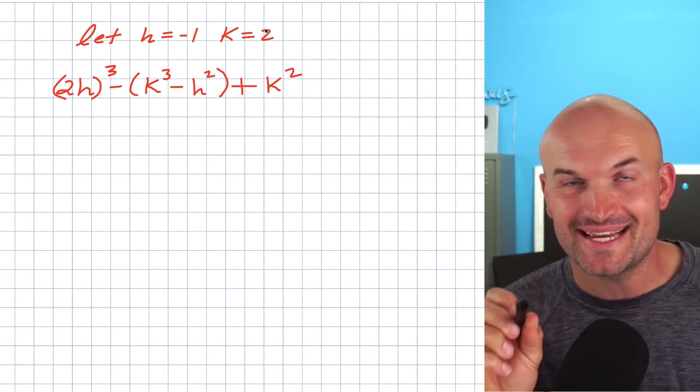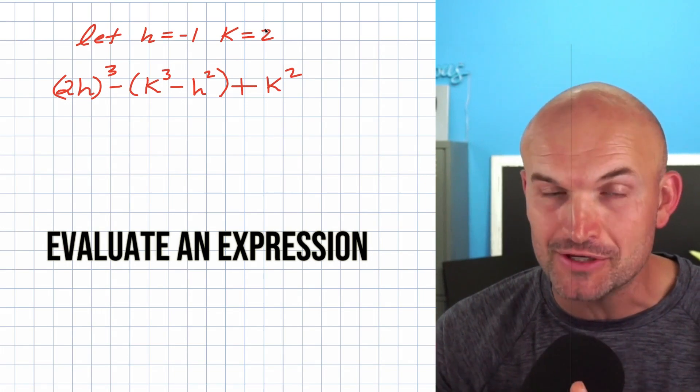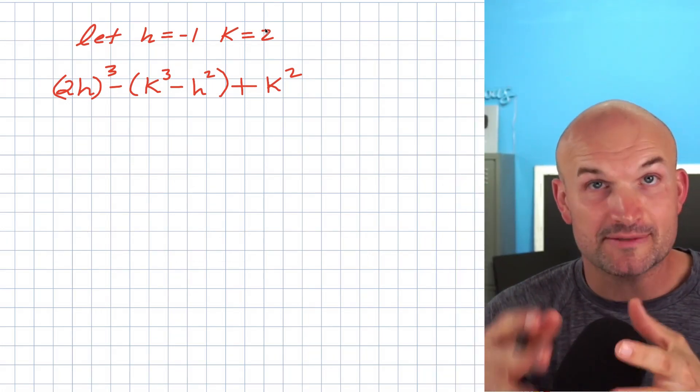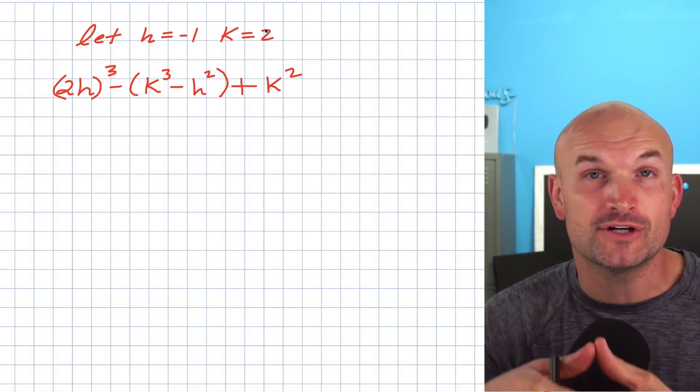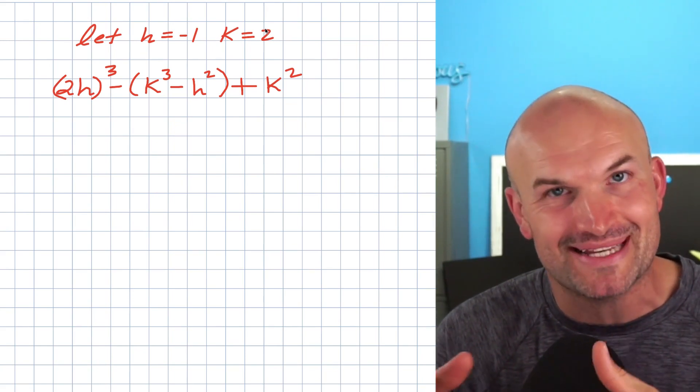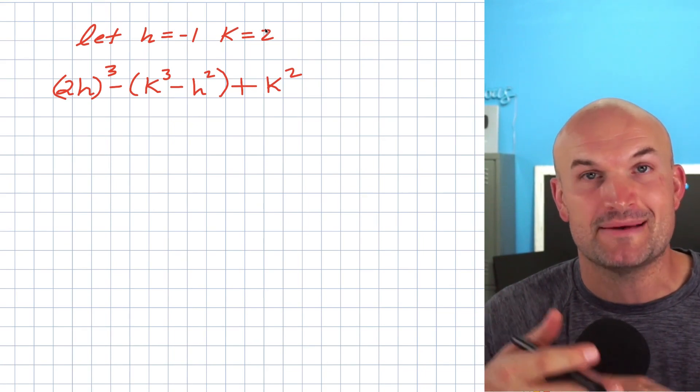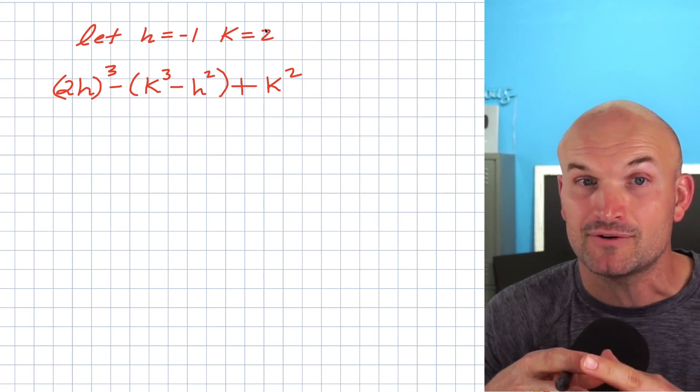I want you to be careful with this mistake that students make all the time when they're trying to evaluate an expression for some values and then simplify. It's a mistake that students make over and over again. You might be thinking this might be too easy of a problem or just basic stuff, but I've seen this all the way from algebra one through calculus and beyond.